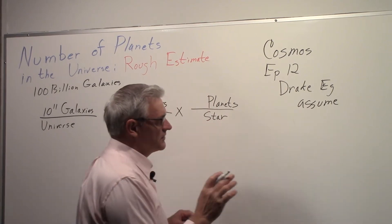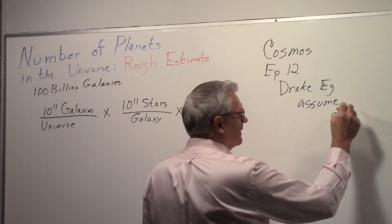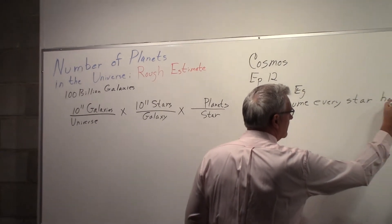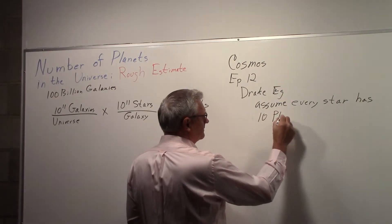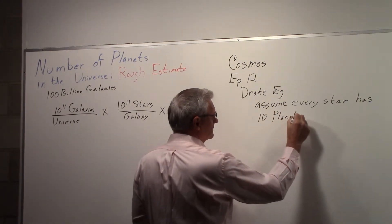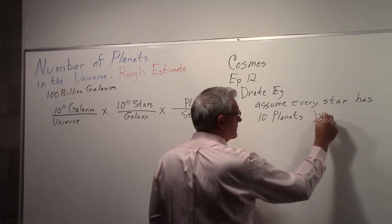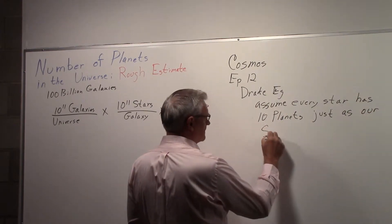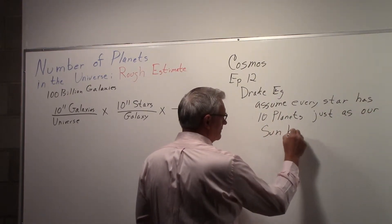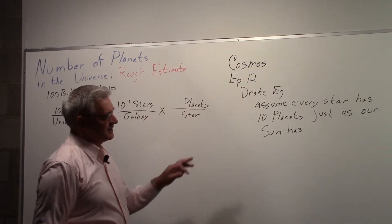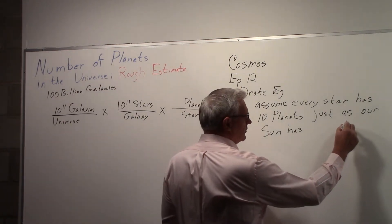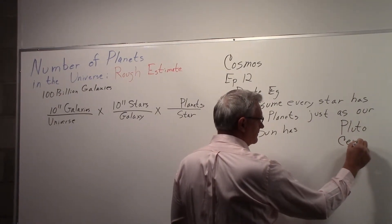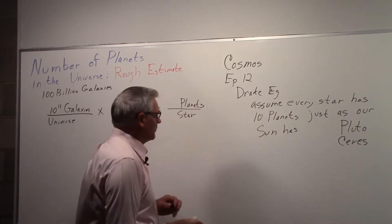Assume every star has ten planets just as our Sun does, or something to that effect. So he was counting Pluto and Ceres. So we'll use ten planets.